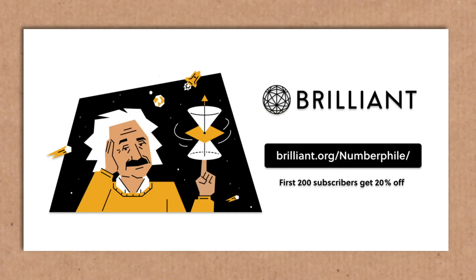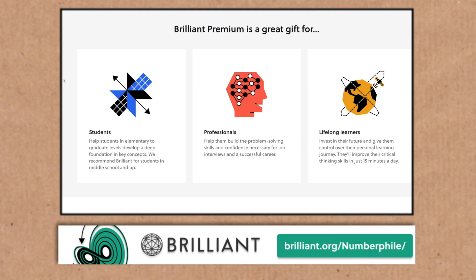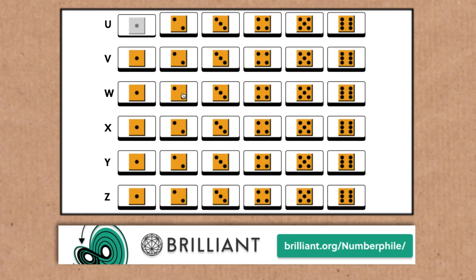Premium subscribers get access to everything on Brilliant, but there's also plenty of stuff to see for free, so why not go check them out, see what you make of it. If you do want to become a premium subscriber, Numberphile viewers are going to get 20% off by going to brilliant.org slash numberphile. That's brilliant.org slash numberphile, there on the screen. And if you're already a member, why not consider gifting one of those premium subscriptions to the student or the lifelong learner in your life?